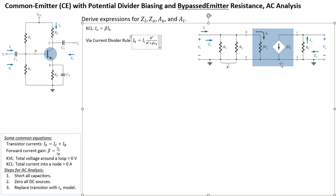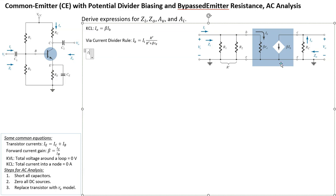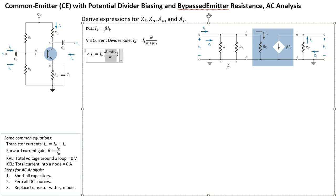From the current divider equation we can rearrange for ii. Therefore, ii equals ib times (R prime + beta*re) divided by R prime. That's our equation for ii.